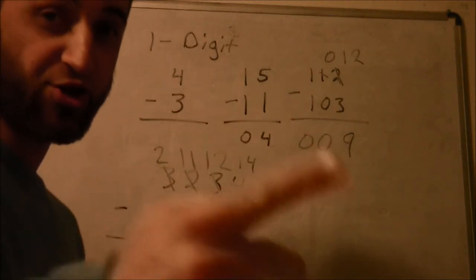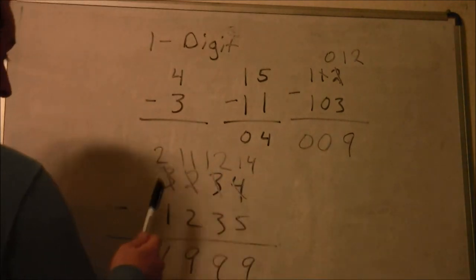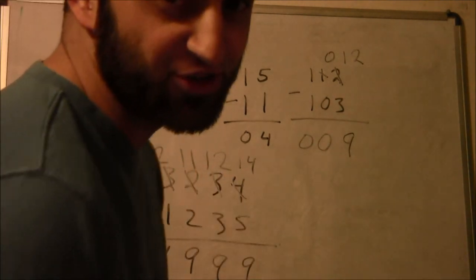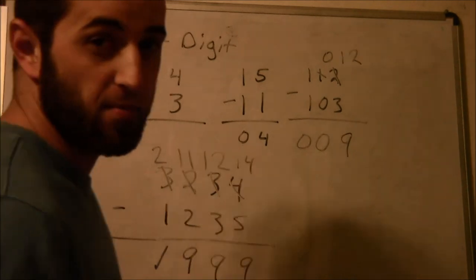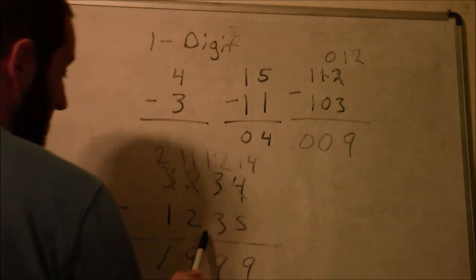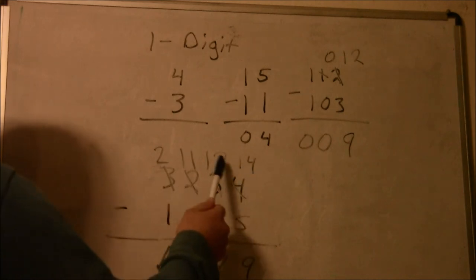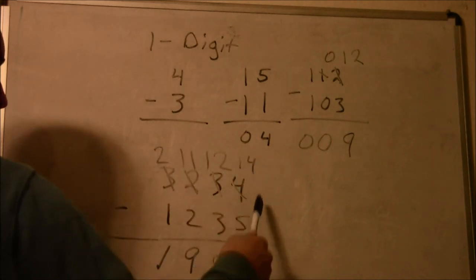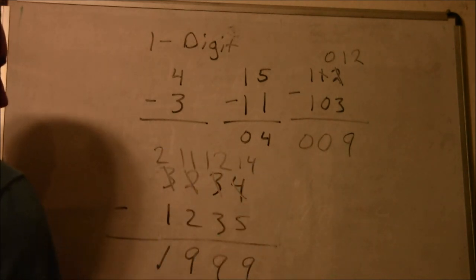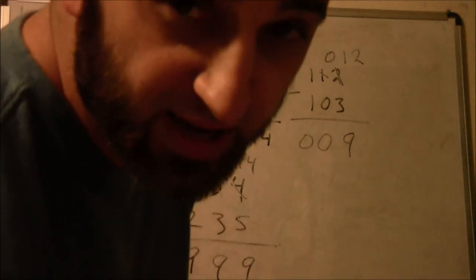And action. Four digits subtraction: 3234 minus 1235. Cross, cross, cross, cross. 14, 12, 11, 2, 9, 9, 9, 1. 1999.